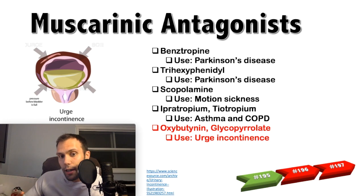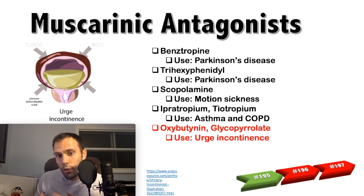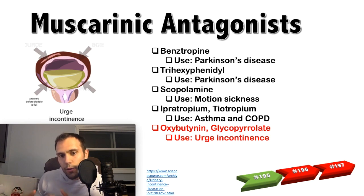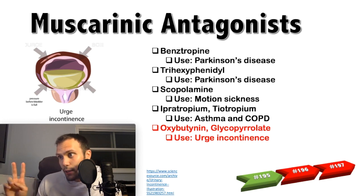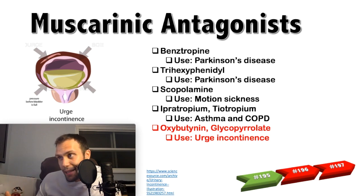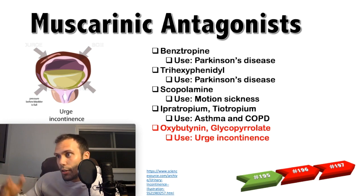Oxybutynin and glycopyrrolate are used in urge incontinence. Urge incontinence is a sudden, powerful urge to urinate — so powerful that patients often can't make it to the bathroom in time, with frequent urinary leakage at night. It is caused by an overstimulated detrusor muscle, which is a cholinergic problem, so anticholinergic medications fix it. Diagnosis is confirmed with urodynamic testing to observe detrusor activity. These medications can also be used for mild UTI-related urgency and bladder spasms after urologic surgery.